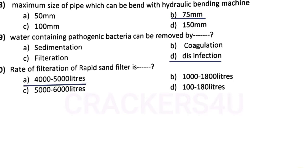Question number nineteen: rate of filtration of rapid sand filter is — answer option A, 4000 to 5000 litres.